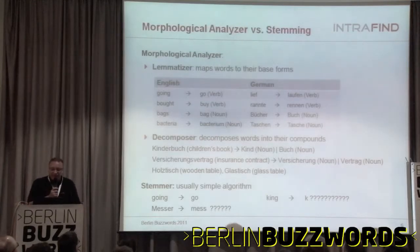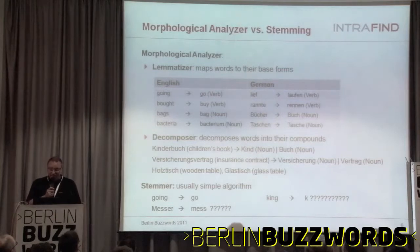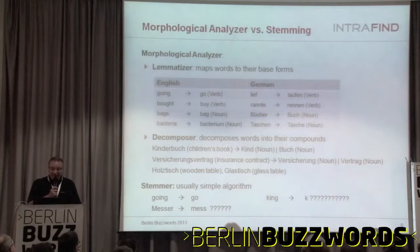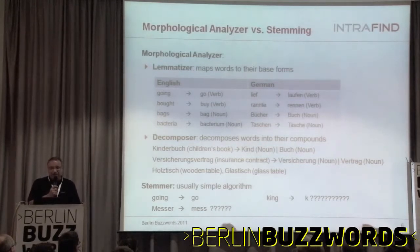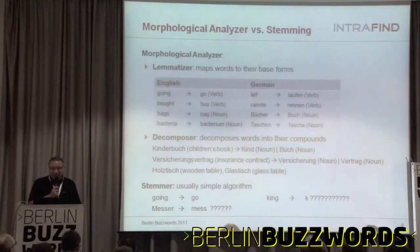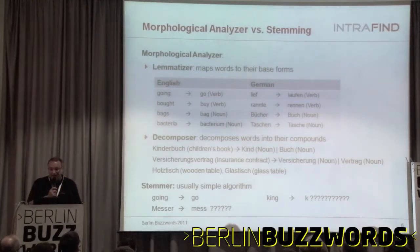What is morphological analysis compared to stemming? A morphological analyzer does three things. First, it is a lemmatizer — it maps inflected forms of words to their base forms. In English, 'going' is mapped to 'go,' 'bought' is mapped to 'buy,' and so on. This may not be so important for English, but it is important for most European languages with much more inflections, like German, or even richer languages like Hungarian or Russian. For morphologically rich languages, it is really important to have lemmatizers instead of algorithmic stemmers.